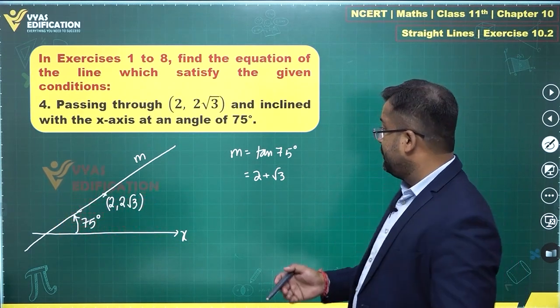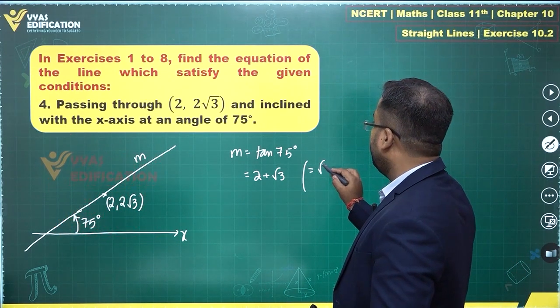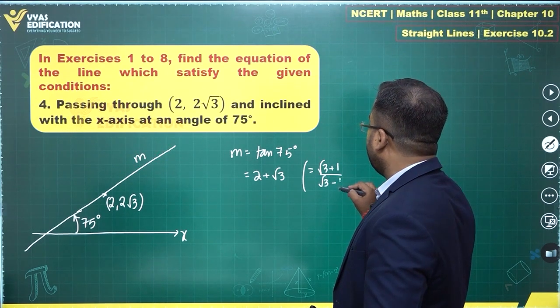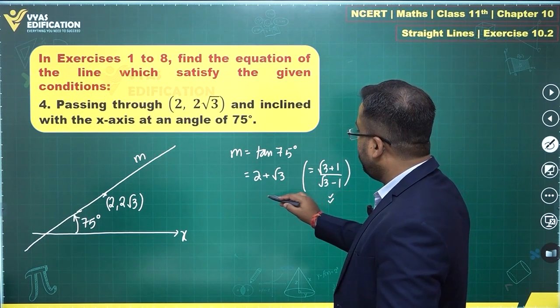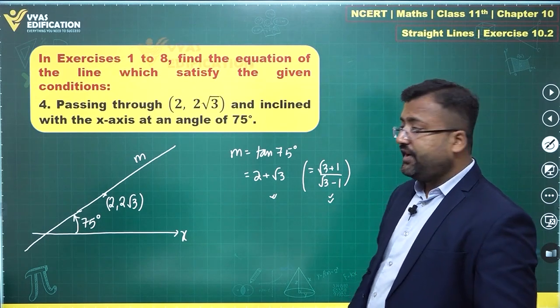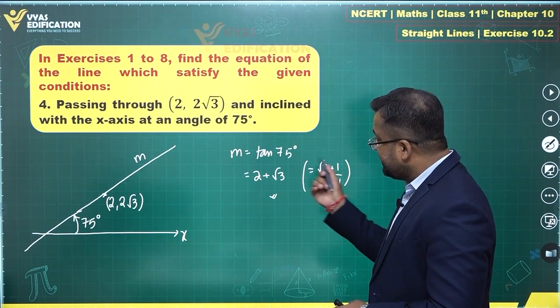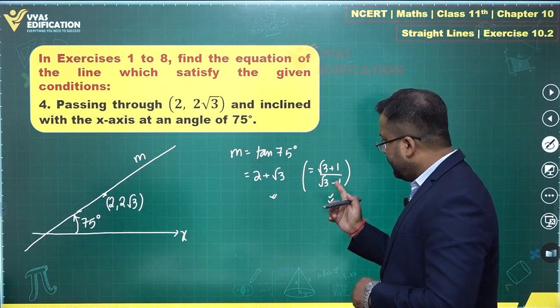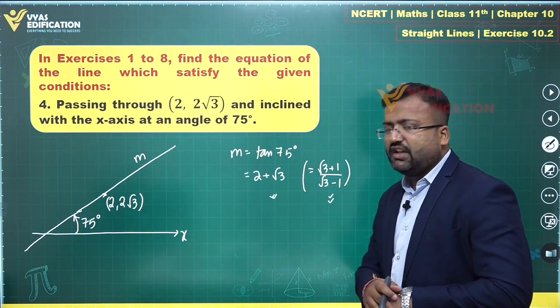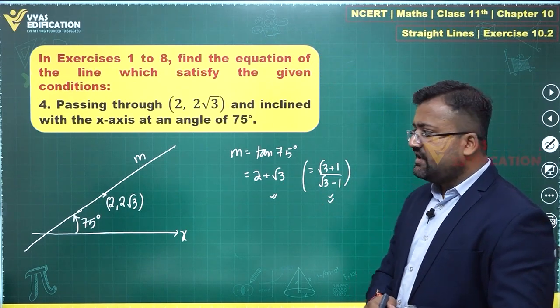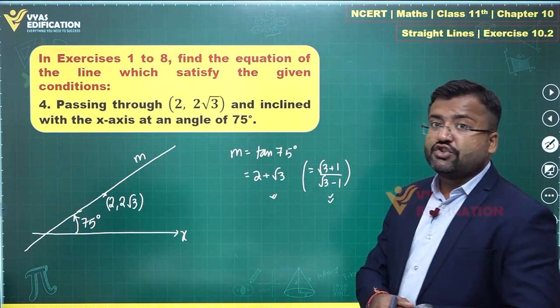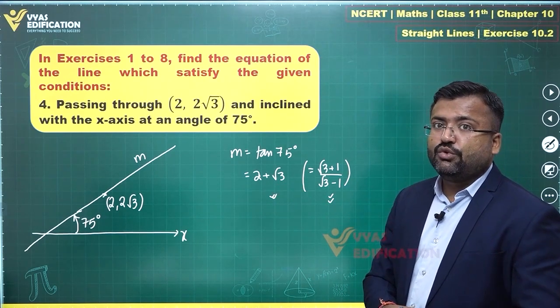And what's the value of tan 75 degree? You should be aware of that. Tan 75 degree is actually 2 plus root 3. This can also be written as root 3 plus 1 upon root 3 minus 1. If you remember this version well and good, if you remember this version it is also good. This can be rationalized to give you this, right? Rationalizing the denominator will actually convert this into this particular form.